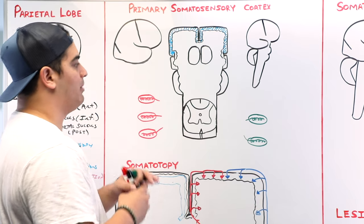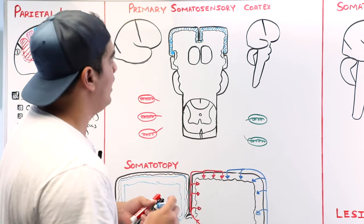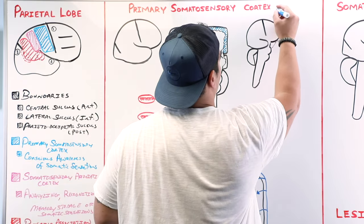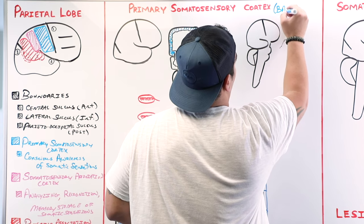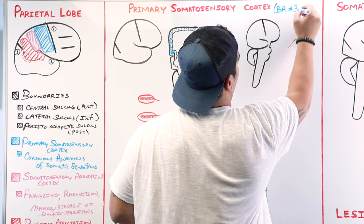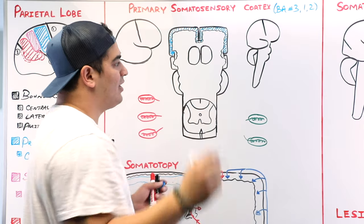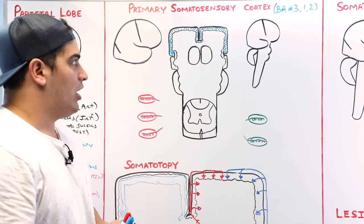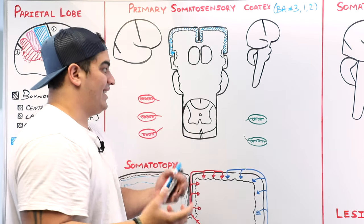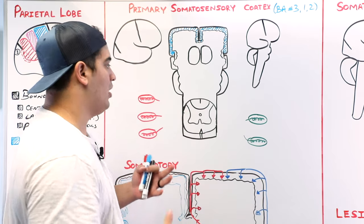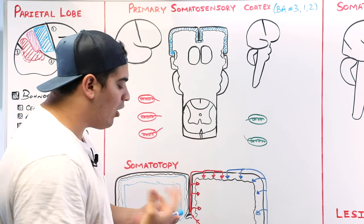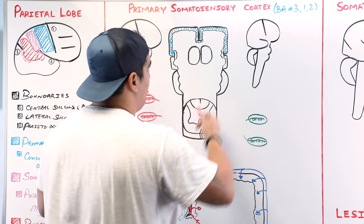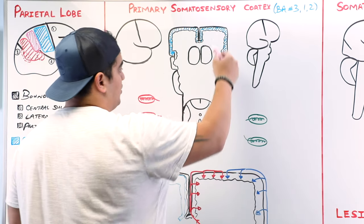Now let's dig into the primary somatosensory cortex. Sometimes we assign a Broadman number to this area — it's referred to as Broadman area 3-1-2. The primary somatosensory cortex is involved with conscious awareness and perception of somatic sensations. There are two pathways that coalesce onto that primary somatosensory cortex.